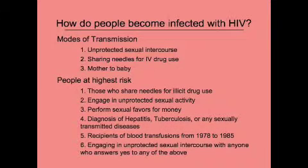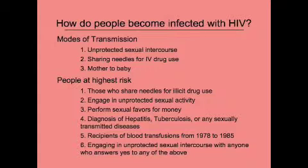People at highest risk are those who use illicit IV drugs and steroids and share any of the supplies, including the needle itself and cotton or water used to clean the site of injection. Also at risk are those who have unprotected sex of any kind with multiple or anonymous partners, have sex for money, or have been diagnosed with hepatitis, tuberculosis, or any sexually transmitted disease. Blood transfusion recipients from 1978 to 1985 are also at risk, as are those having unprotected sex with anyone who answers yes to any of the above conditions.